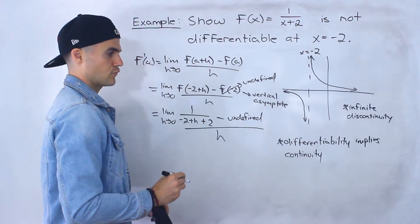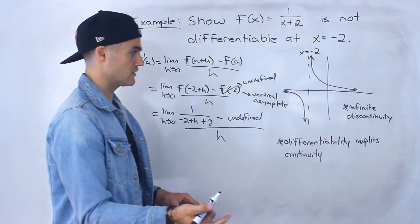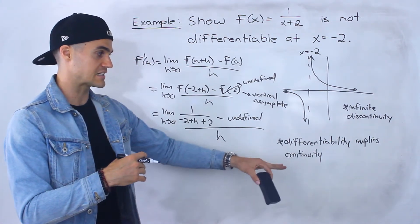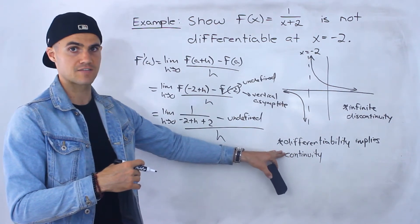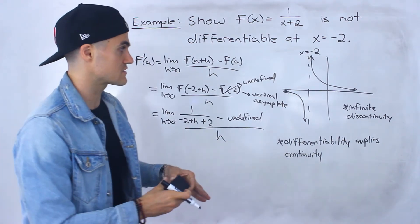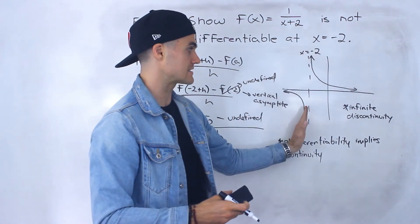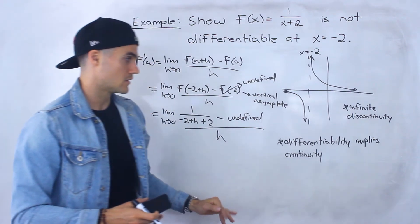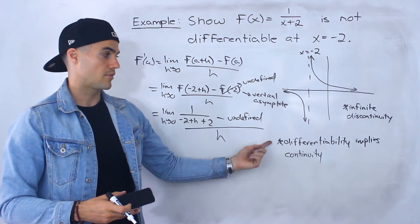So for a function to have a derivative at a certain x value, it has to be continuous at that x value. And so because this function isn't continuous at this x value, it's not differentiable there.